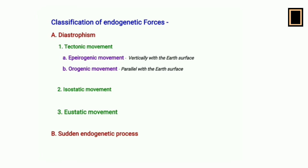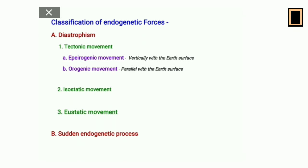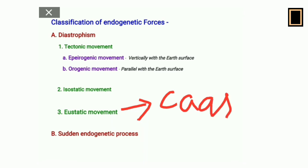Eustatic movement involves a vertical upliftment or subsidence of the earth's crust, occurring only in the coastal region. In India, the western coastal plains sometimes experience vertical upliftment or subsidence due to such eustatic movement, which affects coastal streams and narrow coastal strips.